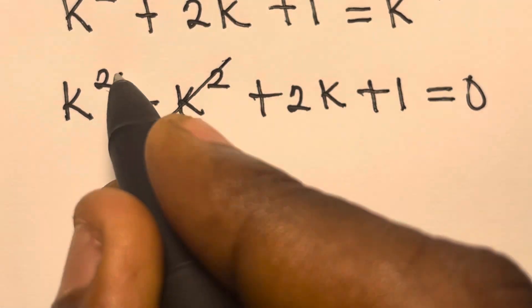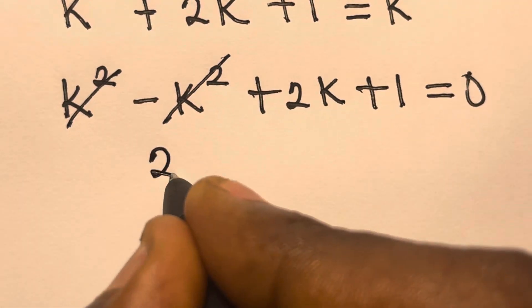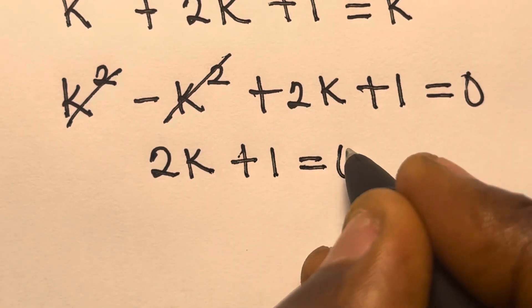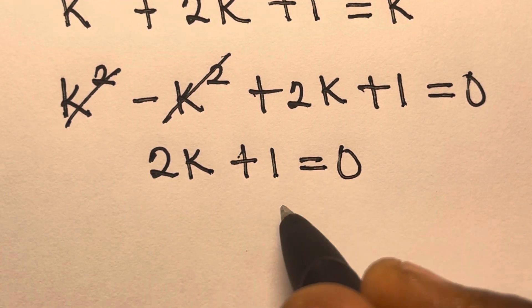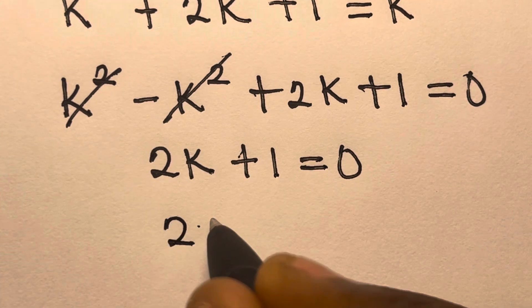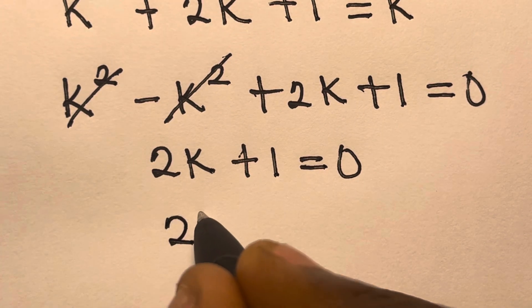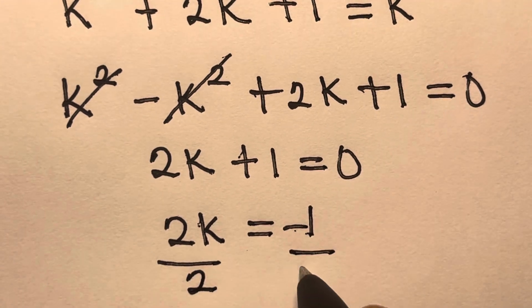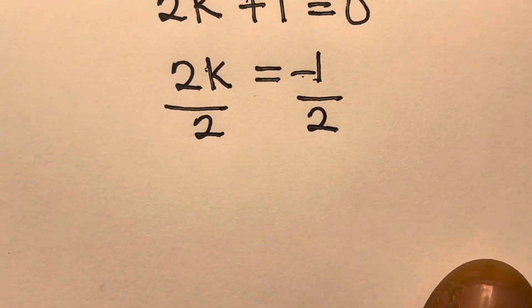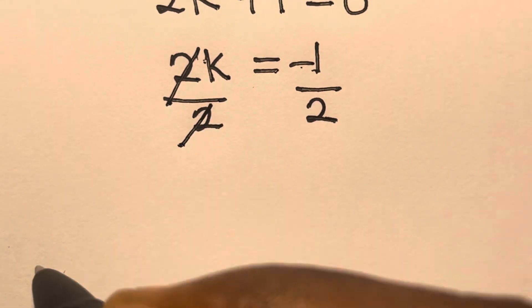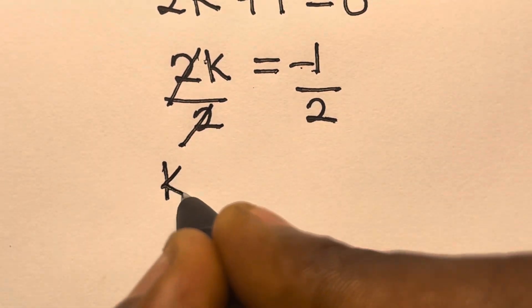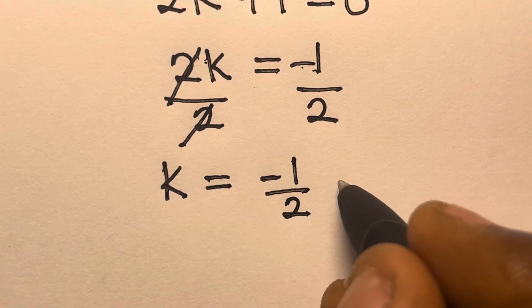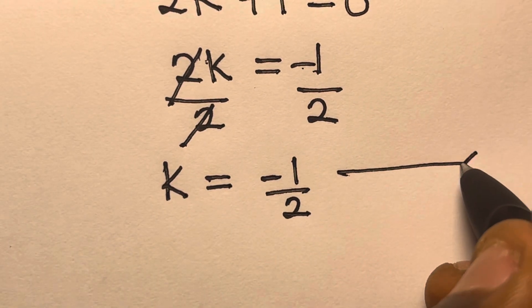So now we cancel this. We have 2k plus 1 equals 0. We can transfer this one to the other side so that we can easily divide both sides by 2. We have 2k equals minus 1. So now let's divide both sides by 2. So 2, we cancel out 2. So we have k equals minus 1 divided by 2.